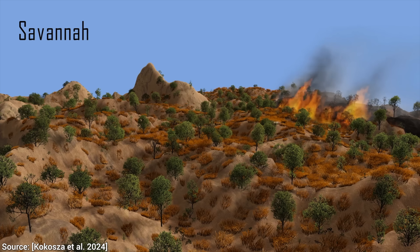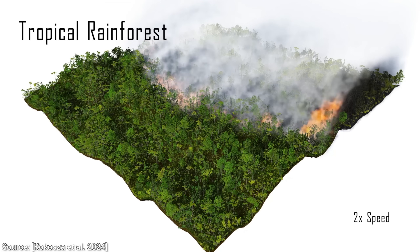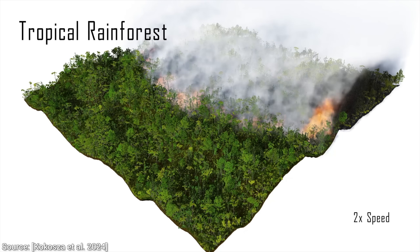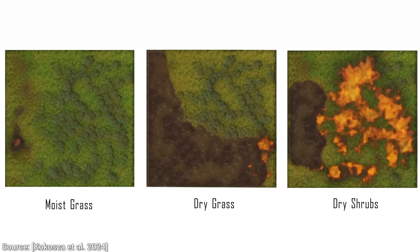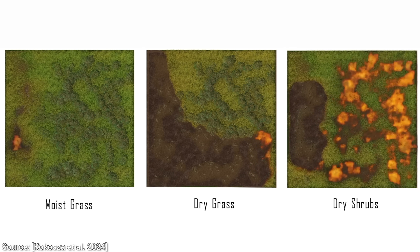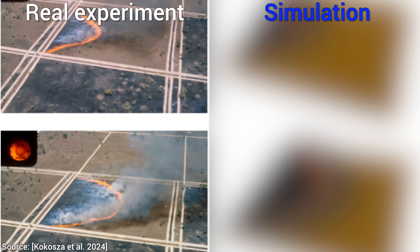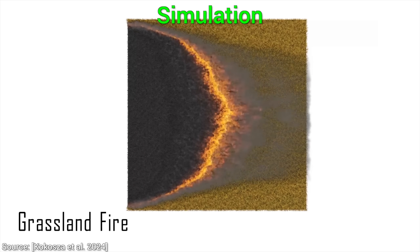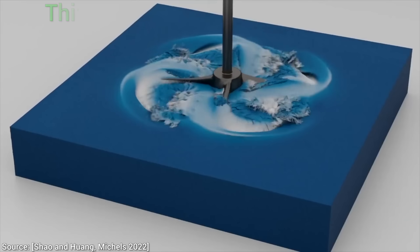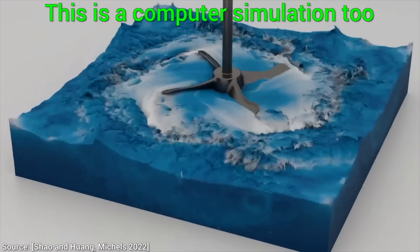So what can it do? It can show us what a fire in a savannah looks like, and how it's different from a tropical rainforest, how the moisture content of the grass changes the fires, and how close a simulation can get to reality, and so much more. Dear Fellow Scholars, this is Two Minute Papers with Dr. Károly Zsolnai-Fehér.